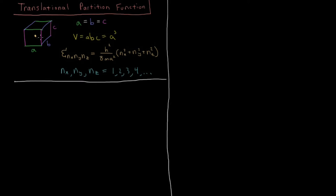The energy levels allowed for a particle free to move around in this box come from the three-dimensional particle-in-a-box model from quantum mechanics. We use statistical mechanics to bridge the gap between that quantum mechanical result and our macroscopic thermodynamics. These energy levels depend on three quantum numbers, nx, ny, and nz, which are all integers starting at one, chosen independently from each other. The energy is h squared over 8 times mass times a squared, times the sum nx squared plus ny squared plus nz squared.